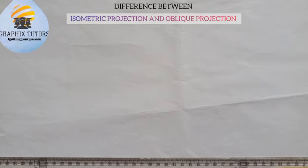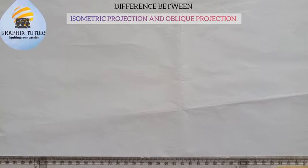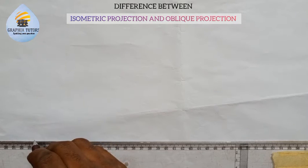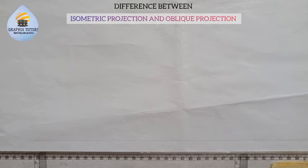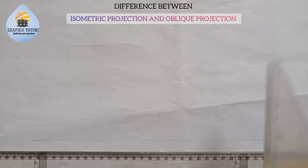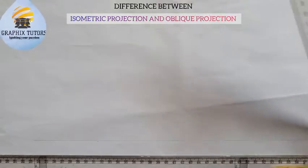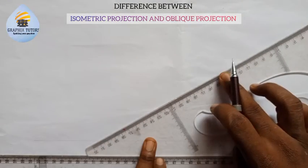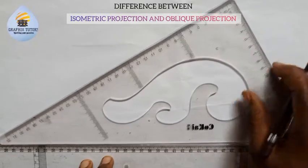My name is Graphics. In this video, I want to learn how to differentiate between isometric projection and oblique projection. This is my baseline. We know that when drawing any projection — isometric or orthographic — we have three different axes: x, y, and z. When drawing in isometric projection, you use your 30 and 60 degree set square along with your T-square.